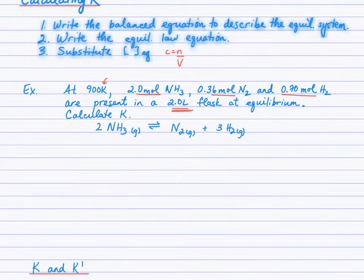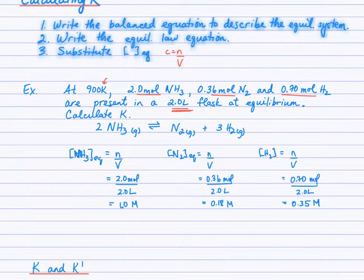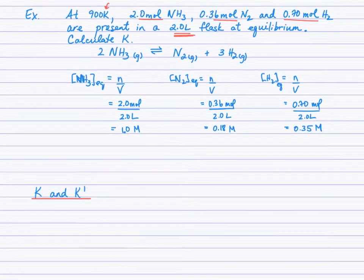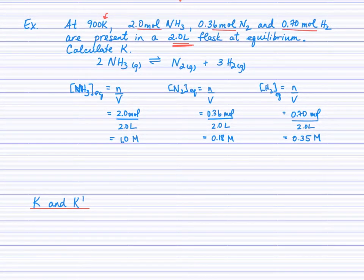Anticipating that we're going to be substituting equilibrium concentrations, we better calculate them first. So the concentration at equilibrium of the NH3 is going to come from N over V. So 2.0 moles divided by the 2.0 liters, 1.0 moles per liter. We can do the same thing for N2 and H2. You can see here that the concentration of the various entities are now known at equilibrium. So we can write the equilibrium law equation and then substitute our values. Go ahead and write the equilibrium law equation for this equilibrium system as written.